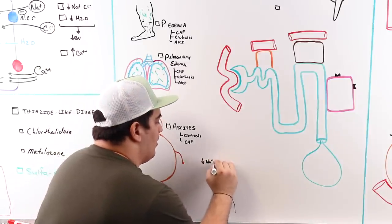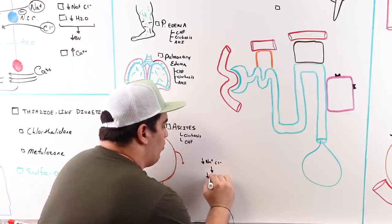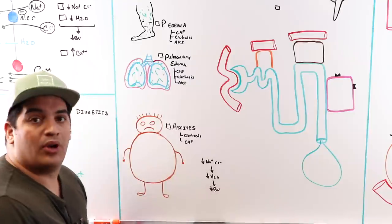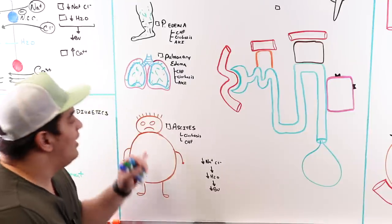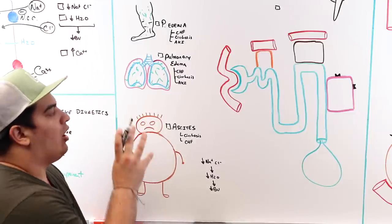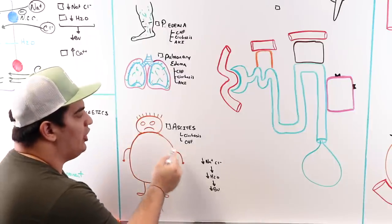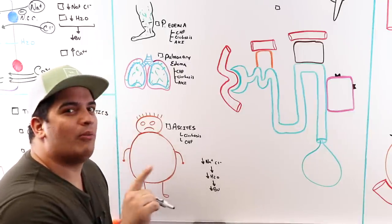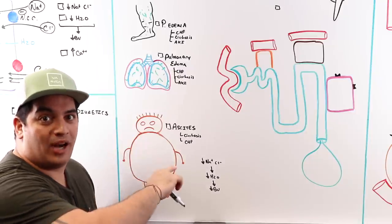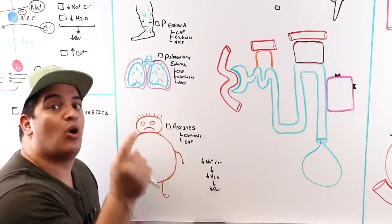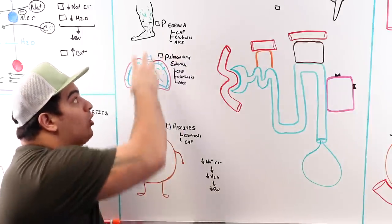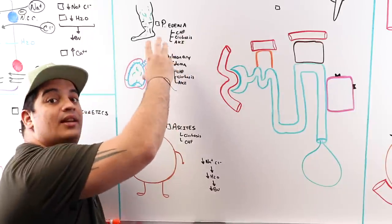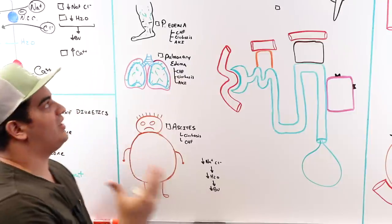By decreasing sodium and chloride reabsorption and reducing water pull into the blood, thiazides decrease blood volume — helpful in someone who's already fluid overloaded. This applies to peripheral edema, pulmonary edema, and ascites secondary to CHF, cirrhosis, or AKI. Metolazone is commonly paired with a loop diuretic like furosemide in these situations.